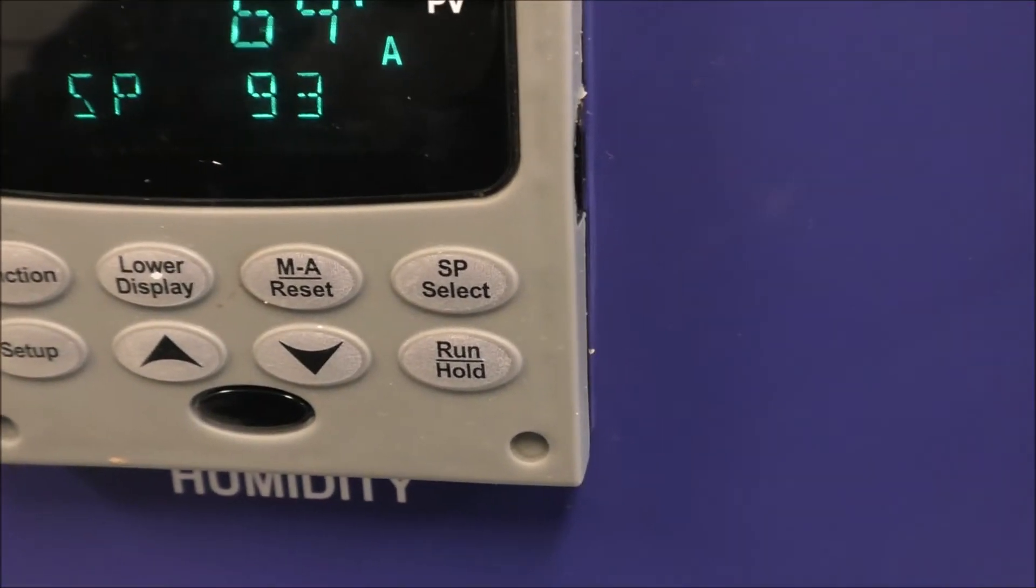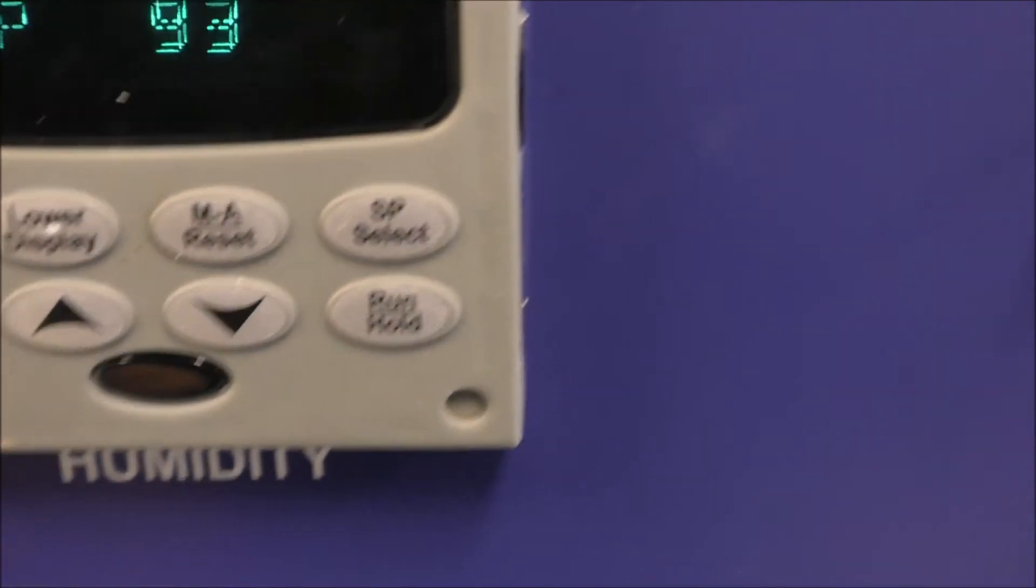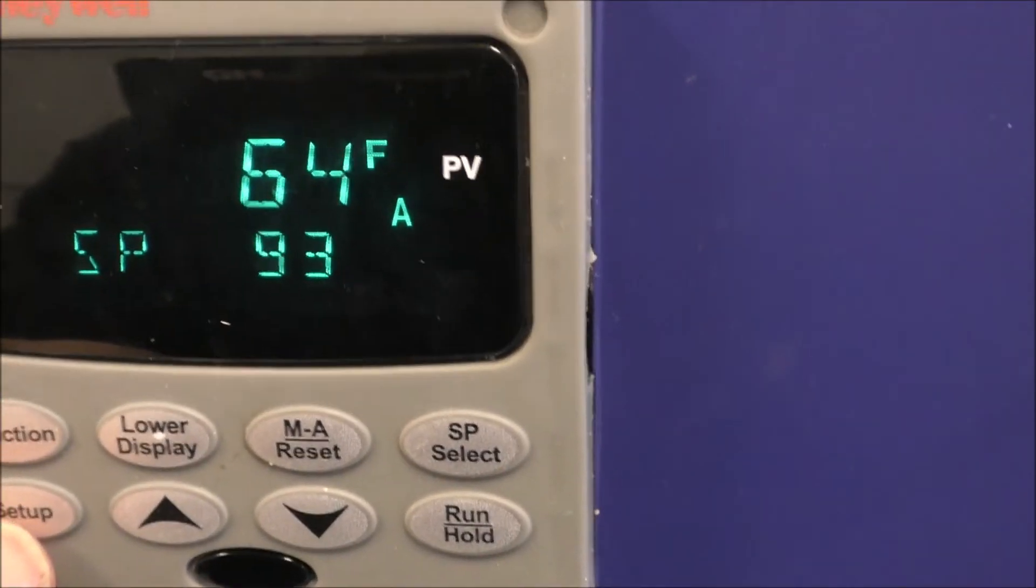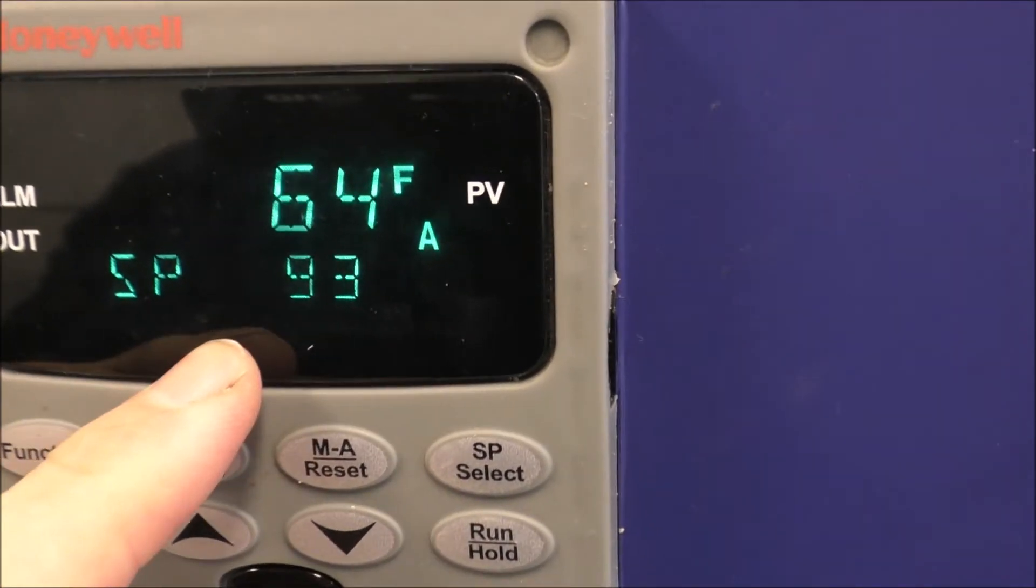To change your 2500 controller from Fahrenheit to Celsius, first make sure you start at the home screen where you can do your set point.